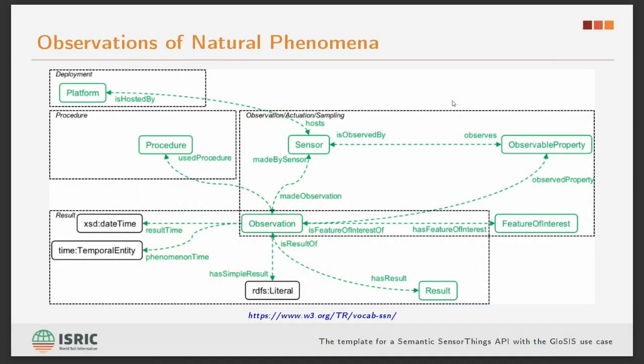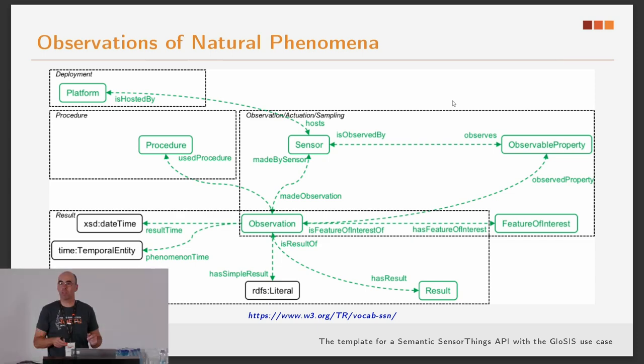What this means is that with this ontology, if I structure my data — if I create my knowledge graph complying with this ontology — I am immediately aligned with the SensorThings API. And then the next step is the software.